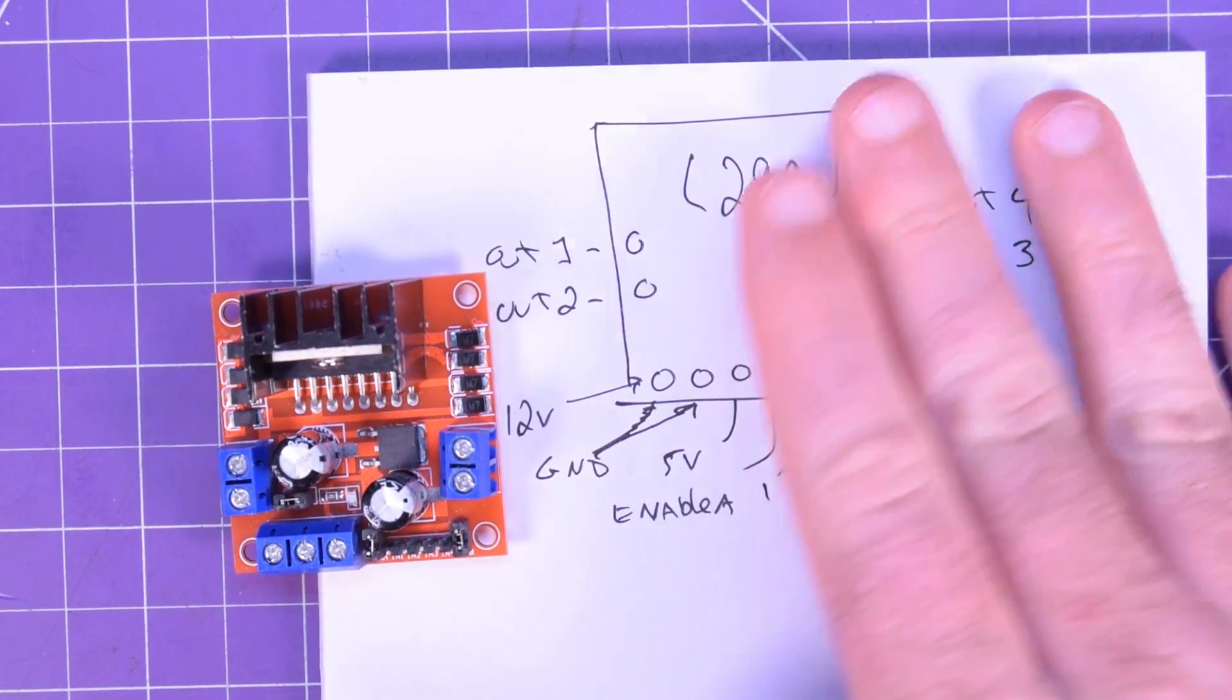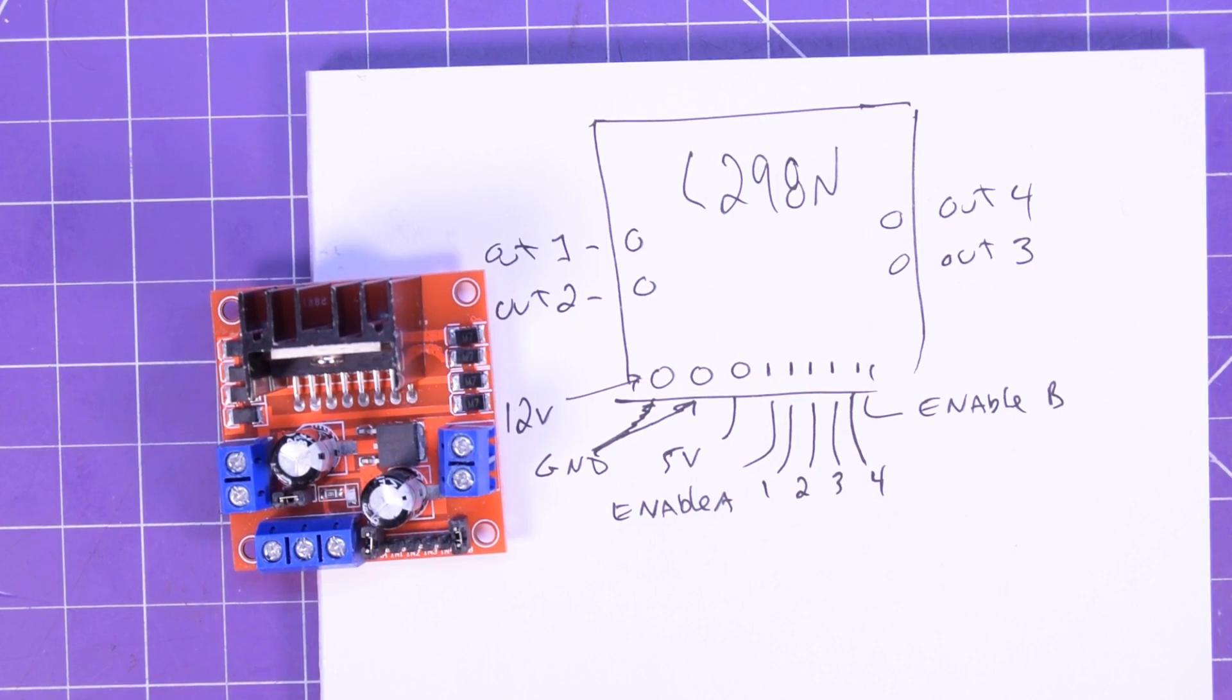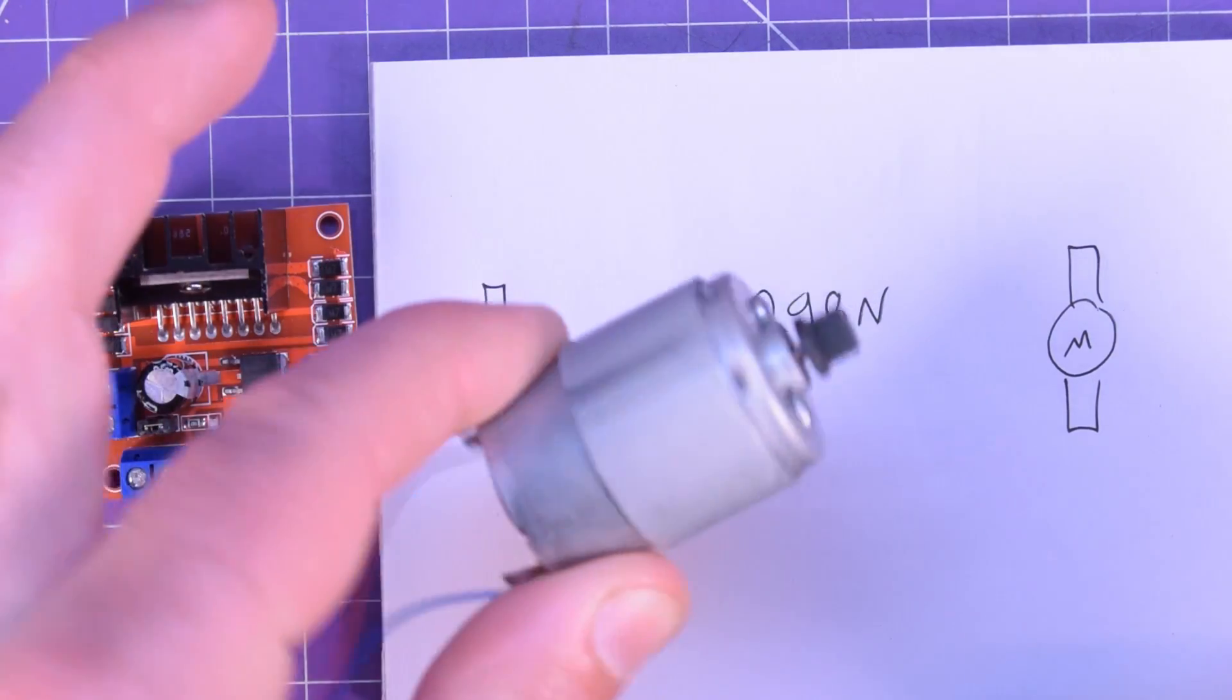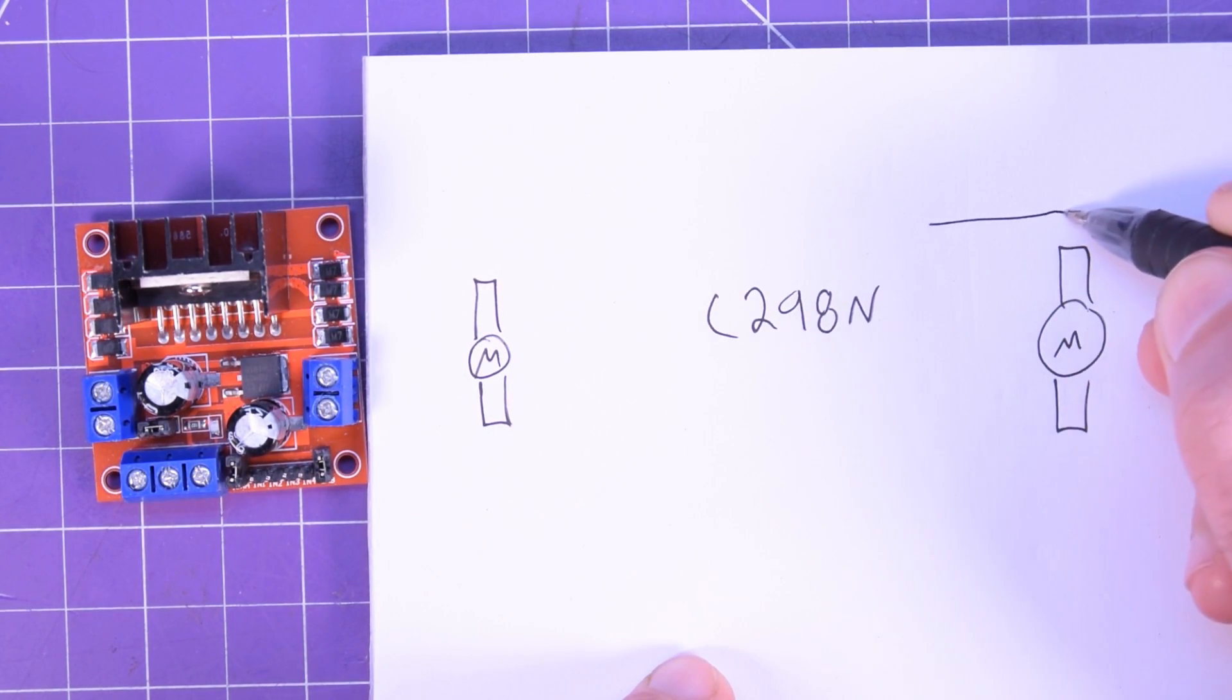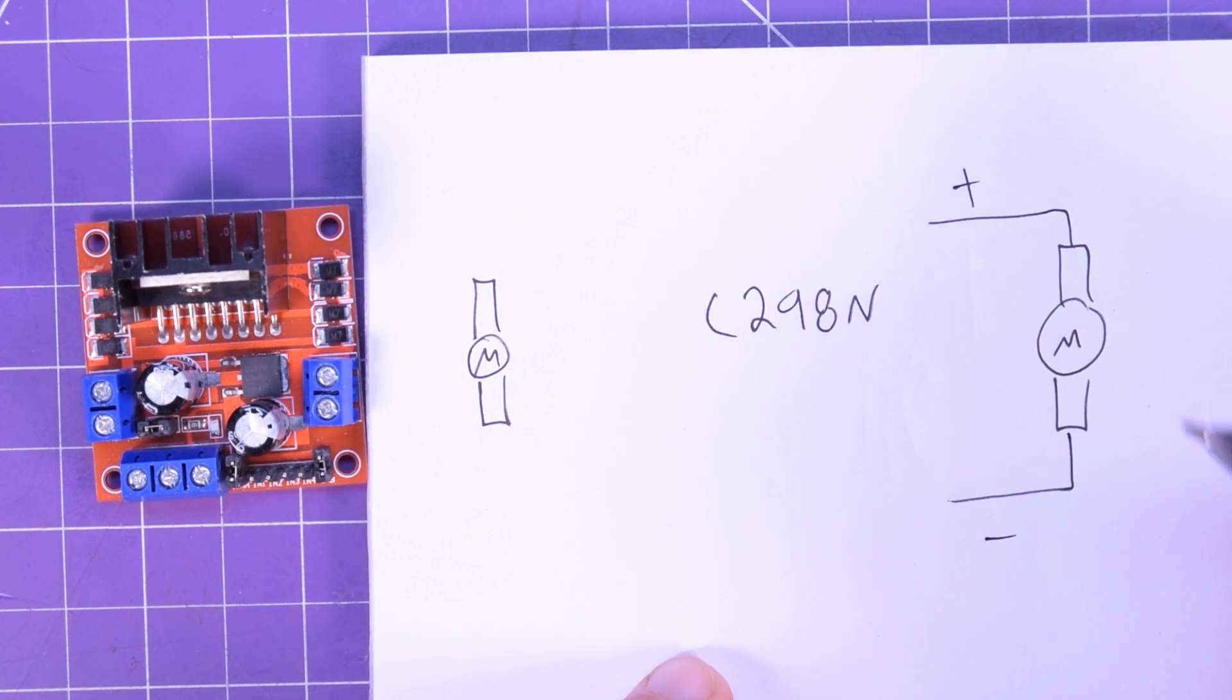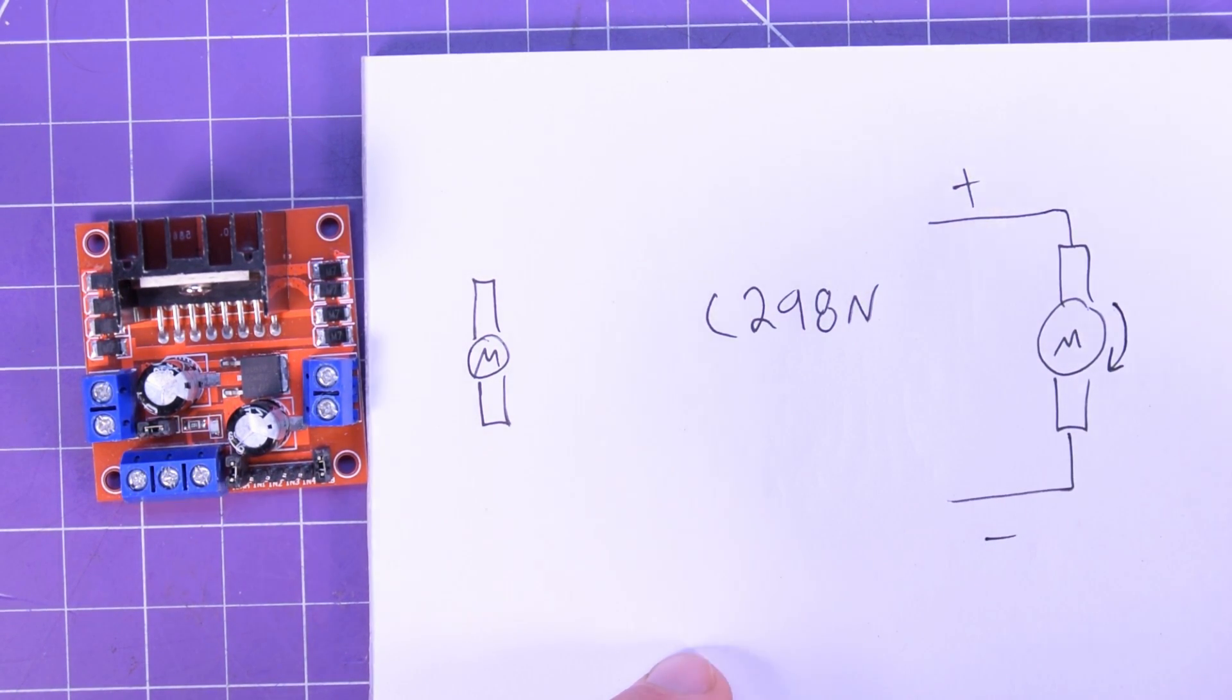So first and foremost we're going to talk about driving brushed motors with these modules. A brushed motor is the simplest of the simple motors. They kind of look like these. I got this one out of a printer. They're ubiquitous, they're everywhere. But how they work is that if you put a positive voltage on the top here and a negative voltage on the bottom, the motor will spin in some direction.